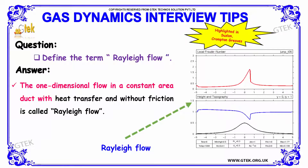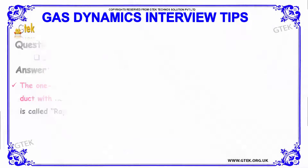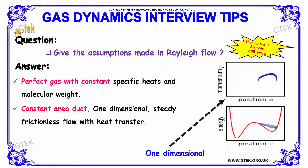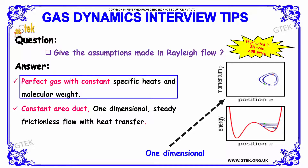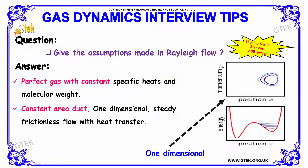Next question: define the term Rayleigh flow. The one-dimensional flow in a constant area duct with heat transfer and without friction is said to be called as Rayleigh flow, depicted here. The assumptions made in Rayleigh flow are: first, a perfect gas with constant specific heat and molecular weight; second, a constant area duct with one-dimensional steady frictionless flow with heat transfer.